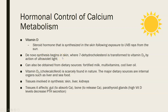De novo synthesis of vitamin D begins in the skin, where cholesterol is transformed into 7-dehydrocholesterol and then into vitamin D by the action of ultraviolet light, which then circulates in the bloodstream. Vitamin D can also be obtained from dietary sources such as fortified milk, multivitamins, vitamin D supplements, and cod liver oil. Vitamin D3 (cholecalciferol) is scarcely found in nature, so sunshine is the primary source.